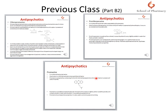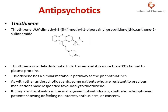Now let us discuss another type of antipsychotic drug — thiothixene. This thiothixene has a phenothiazine-like moiety, but there is a little difference. In phenothiazine, there was nitrogen at the 10th position; however, in thiothixene there is no nitrogen at the 10th position. The piperidine side chain is similar, but at the second position there is a sulfonamide group. This drug is widely distributed into tissues, and very importantly, 90% of this drug is bound to plasma protein.